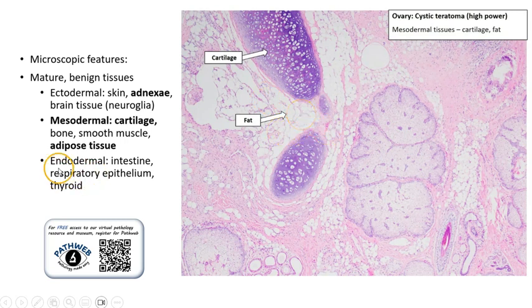Not shown here are endodermal elements, for example intestine, respiratory epithelium, thyroid, etc.